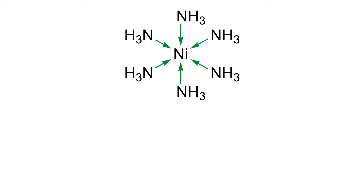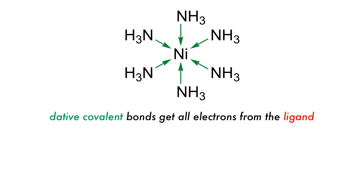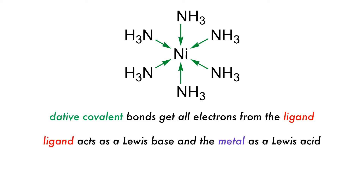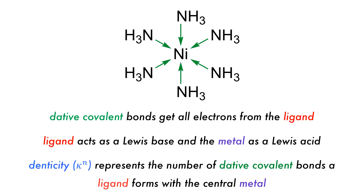Ligands are bound to the central atom by dative covalent bonds, with the metal acting as a Lewis acid accepting electrons from the Lewis base ligands. Denticity, denoted with the Greek letter kappa, represents the number of dative covalent bonds a ligand forms with a central atom.